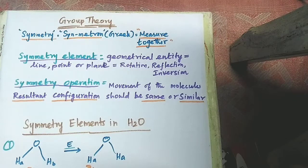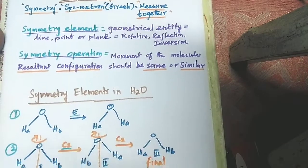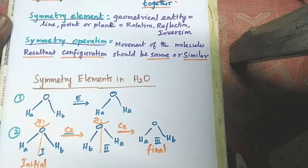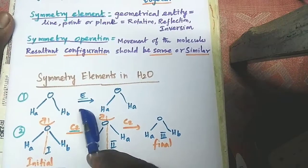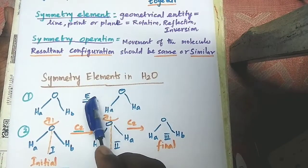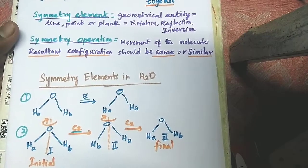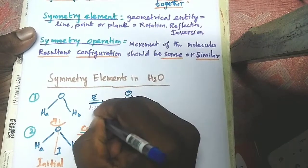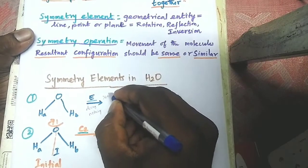Now we are going to see the symmetry elements in the water molecule. The symmetry elements present in water molecule include E. What is E? E means the identity element. Its operation is doing nothing, or sometimes we can say this as 360 degree rotation.